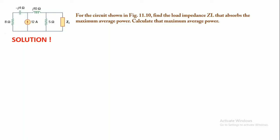Hi, in this video we're going to see the solution of practice problem 11.5 from the textbook Fundamentals of Electric Circuits by Alexander and Sadiku, 6th edition. The problem is asking to find the load impedance ZL that absorbs the maximum average power and calculate that maximum average power. The solution is Step 1: we're going to use the Thevenin equivalent method to find Zth and Vth.